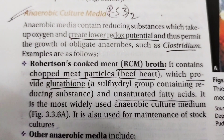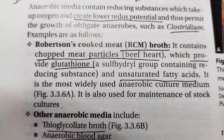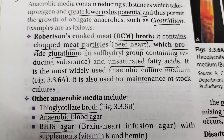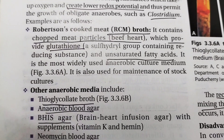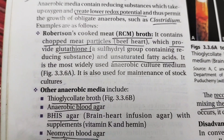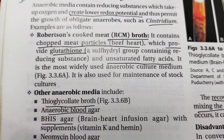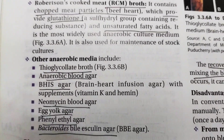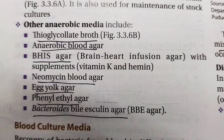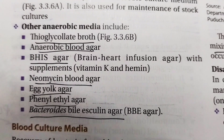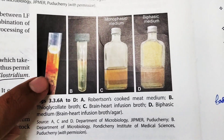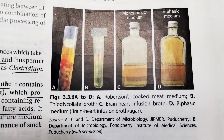Anaerobic cultural media helps in the growth of anaerobic microorganisms such as Clostridium, which grows in an anaerobic environment. Robertson cooked meat broth is a key example — it contains chopped meat particles which provide glutathione, a sulfhydryl group-containing reducing substance, and unsaturated fatty acids, maintaining the anaerobic environment. Other anaerobic cultural media include thioglycolate broth, anaerobic blood agar, brain heart infusion agar, neomycin blood agar, egg yolk agar, phenyl ethyl agar, and Bacteroides bile esculin agar. When bacteria grow into Robertson cooked meat broth, the color changes to black.